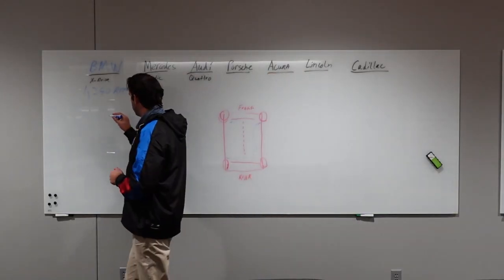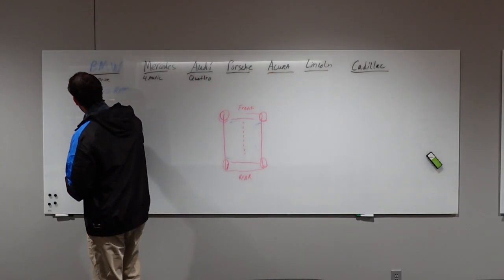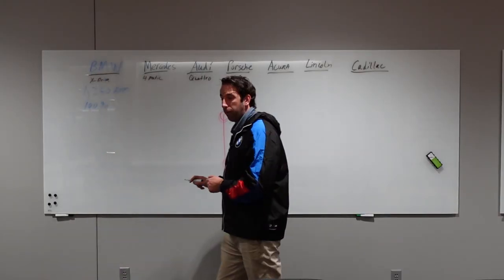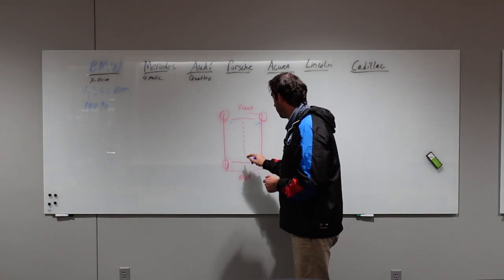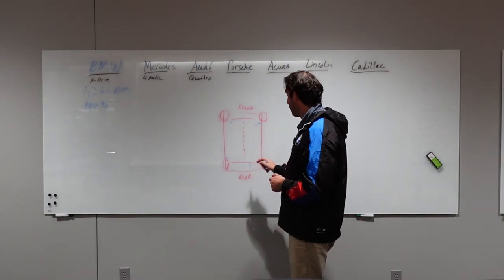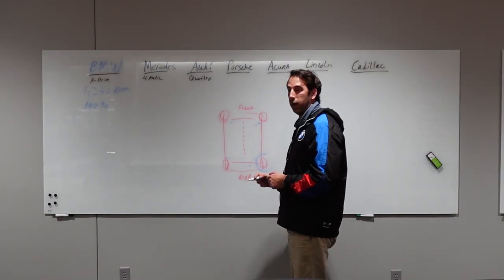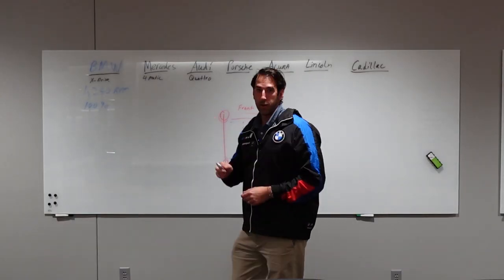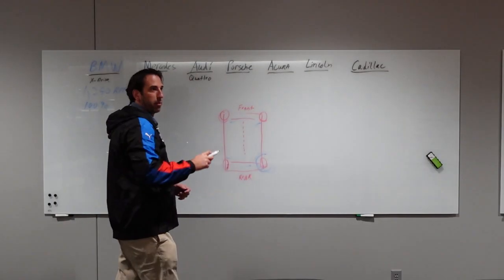The unique thing with BMW's xDrive system is if need be it can send 100% of all available power to the back axle, and if need be it can send 100% of the power to one individual wheel in the back. That's going to be the key difference versus all these other brands up here.